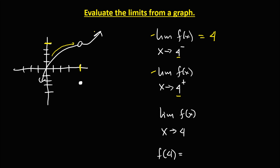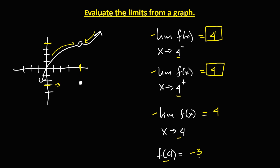For the limit as x approaches positive 4 from the right, the limit is also equal to positive 4. Since the left-side limit is equal to the right-side limit, the limit as x approaches positive 4 is also equal to positive 4. To find the value of f(4): the shaded circle indicates f(4) is equal to negative 3.